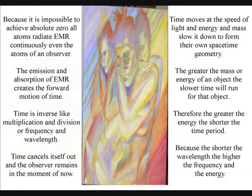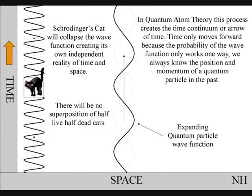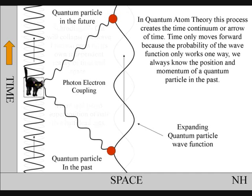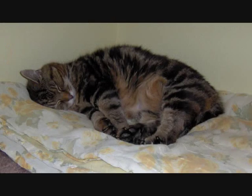To put this very simply, time moves at the speed of light, and energy and mass slow it down to form their own space-time geometry. Therefore, the cat will collapse the wave function, creating its own independent reality of time and space. And there is no superposition of half-live, half-dead cats.